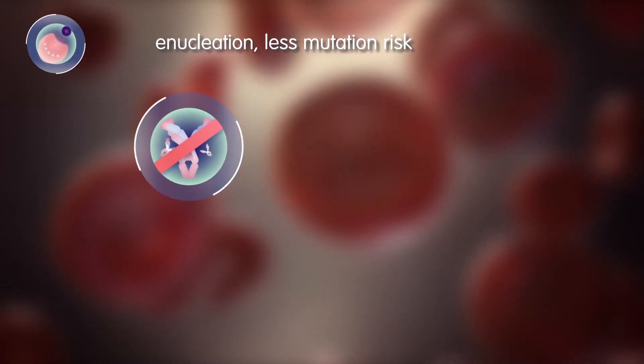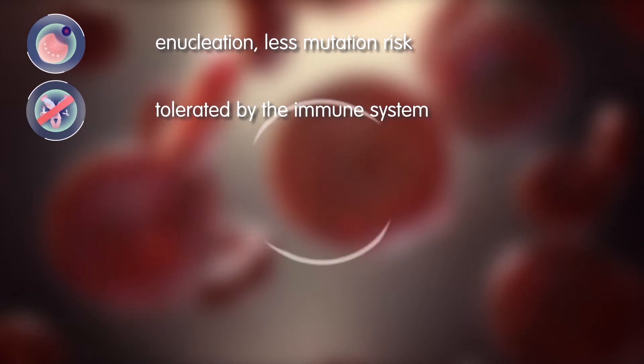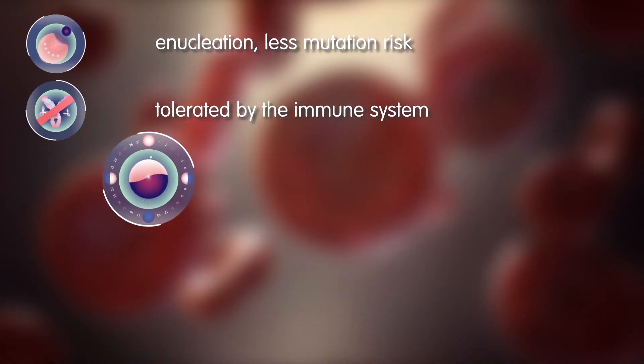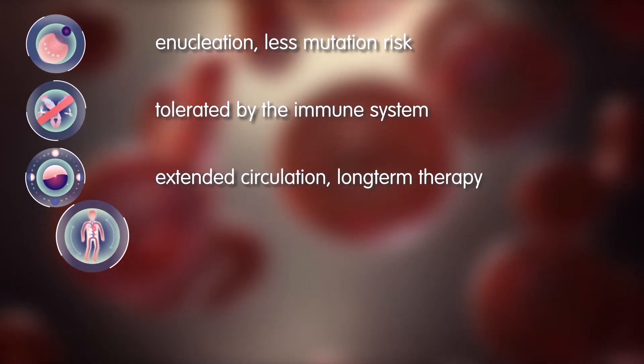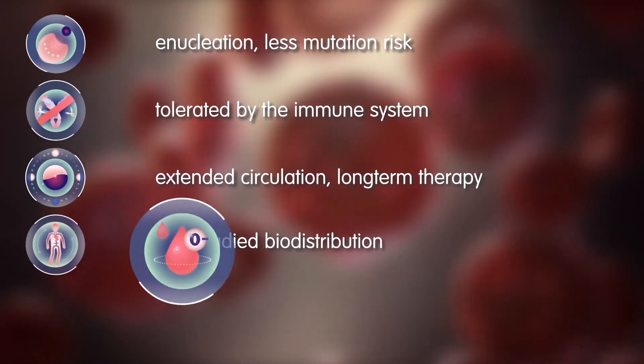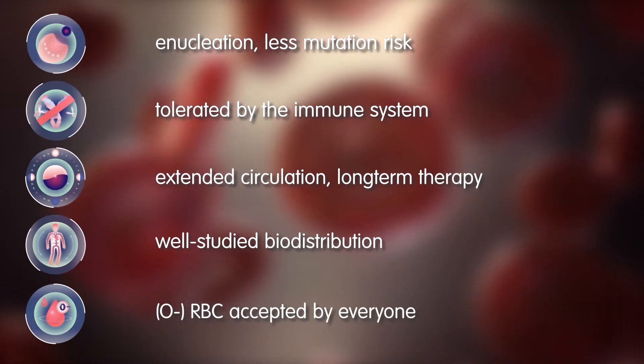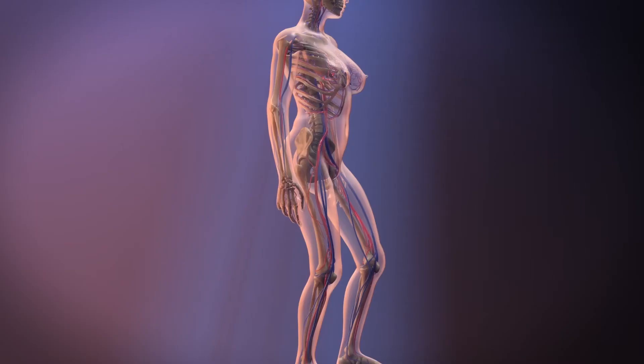Payloads are shielded against immune detection due to immune privilege. They have extended circulation, allowing long-term therapy. Less toxicity since they have a well-studied biodistribution. The use of universally accepted O- blood type permits allogeneic therapies.